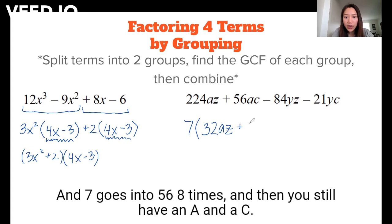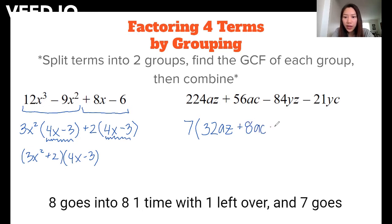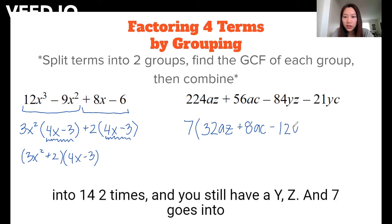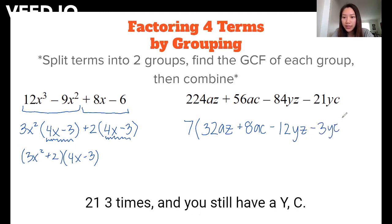7 goes into 56 eight times, and then you still have an A and a C. 7 goes into 84 one time with one left over, and 7 goes into 14 two times, and you still have a Y and Z. And 7 goes into 21 three times, and you still have a Y and C.